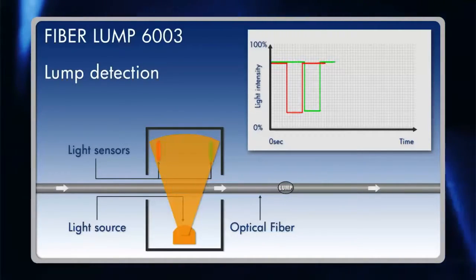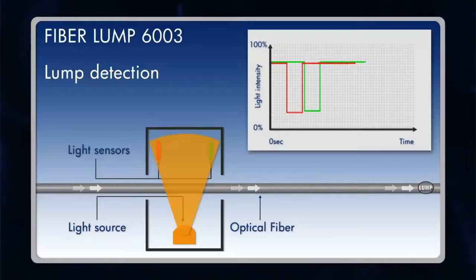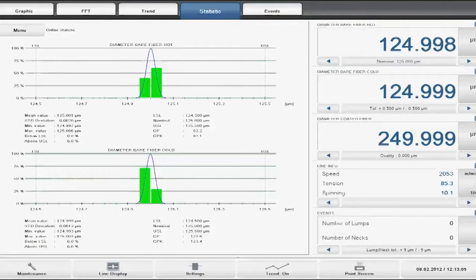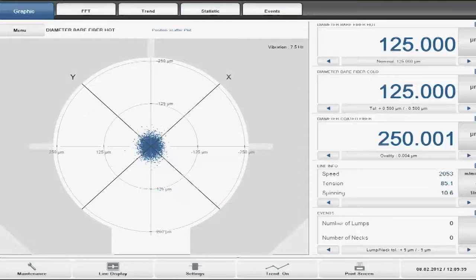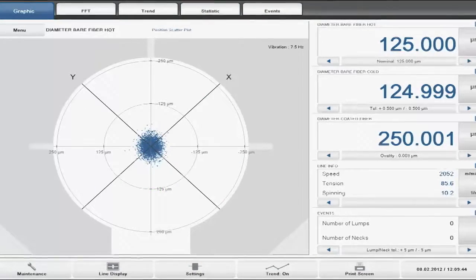The data provided by the gauge heads are recorded and displayed by the processor system Fibre Echo Control. At the monitor, the diameters of the bare and coated fiber are displayed. The exact position in the measuring field is visualized in the form of a scatter plot.